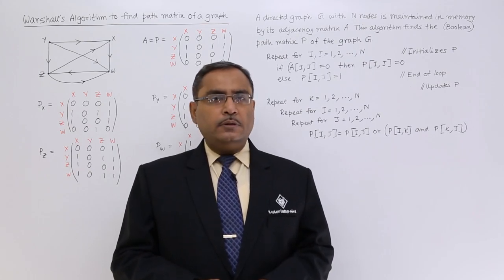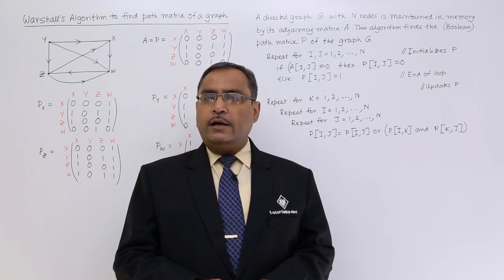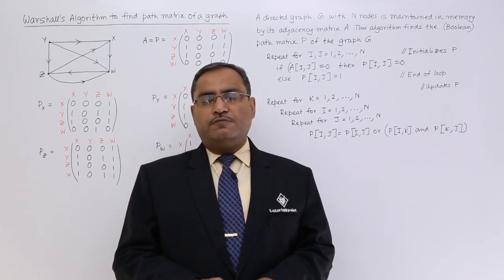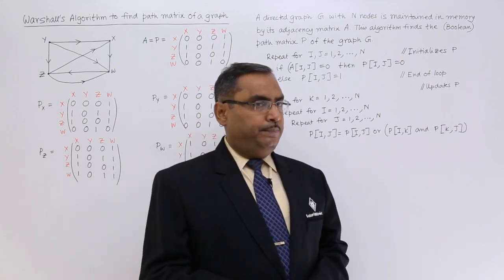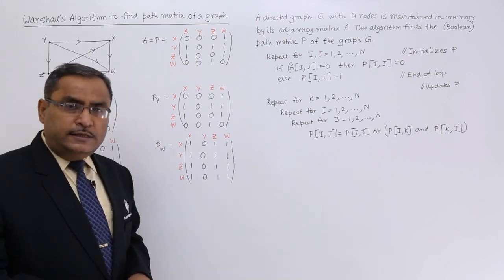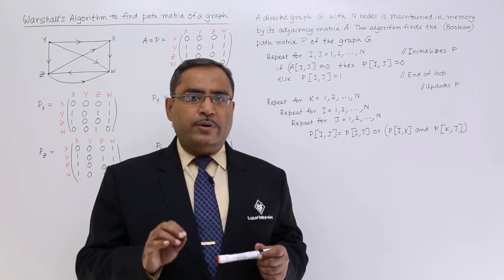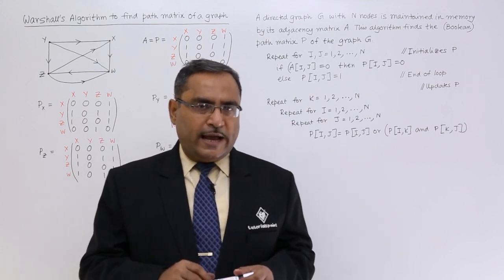Let us consider one example of a given graph on which we will be executing Warshall's algorithm to find the path matrix. This is my graph - this is a directed graph and here we are having 4 nodes actually.